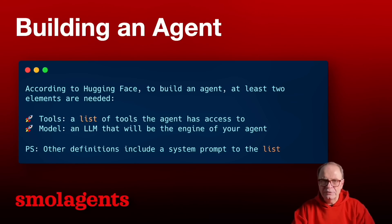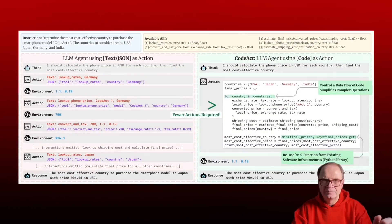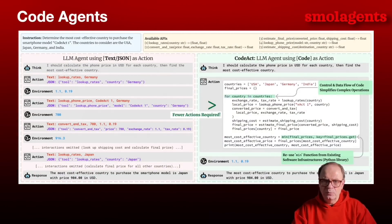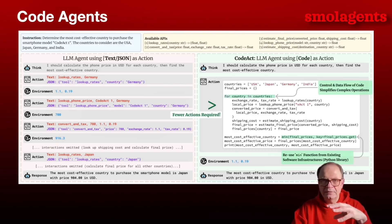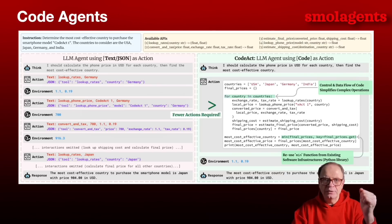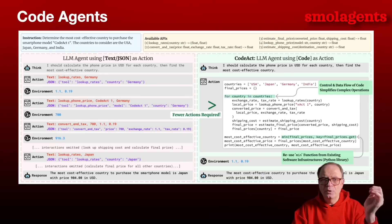Let's look at how code agents work. In a multi-step agent, at each step the LLM can write an action in the form of external tool calls. Normally many frameworks use JSON or plain text to tell the agent what tools to use. But multiple research papers have shown that having the LLM call tools in code is much more productive and much more reliable. The table on screen, taken from the article 'Executable Code Actions Elicit Better LLM Agents,' illustrates the advantages of writing actions in code.